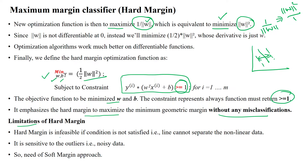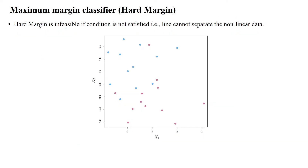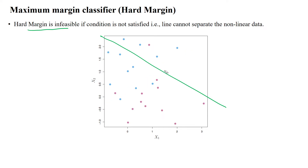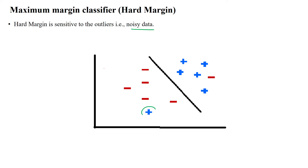There are limitations. Hard margin is infeasible if the condition is not satisfied — that means if the data is not linearly separable, we cannot use the hard margin classifier, and it is very sensitive to noisy data. Looking at this data: we are unable to separate it linearly in any direction. So we cannot use the hard margin classifier on such a dataset. Also, when noisy data points are located in the wrong class region, that is a misclassification — and in this kind of situation, we also cannot use the hard margin classifier.